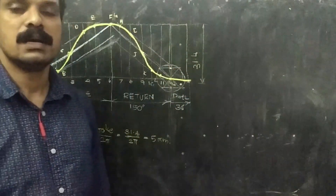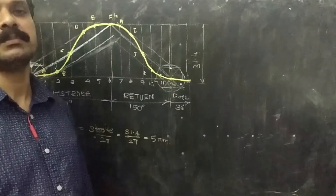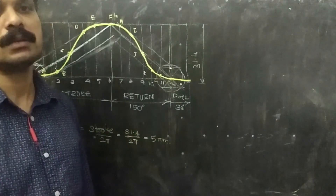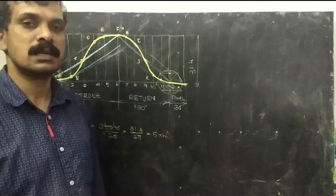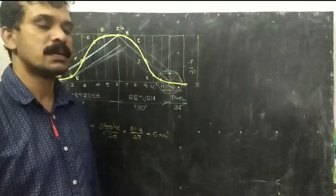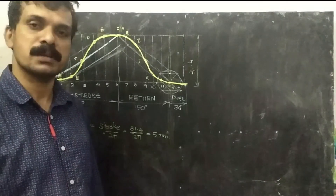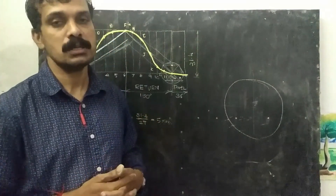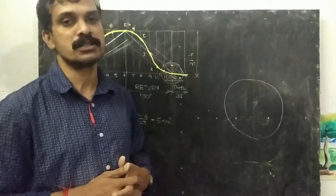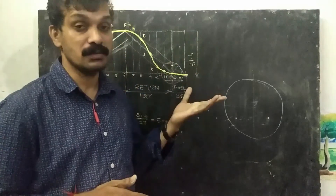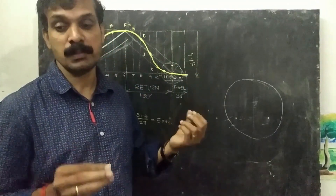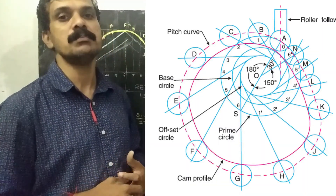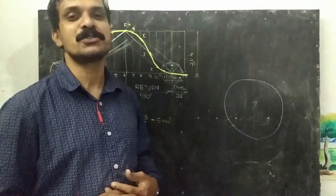This is how the displacement diagram is obtained when the follower is moving with cycloidal motion. The rest can be constructed as explained in previous videos. I hope all of you have understood how to construct the displacement diagram for cycloidal motion and how to construct the cam profile when the radial follower, minimum radius, roller radius, and offset are given. You can see the final constructed cam profile on your screen now. Thank you.